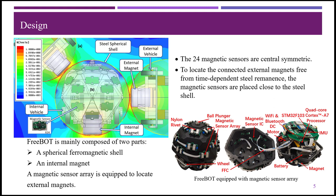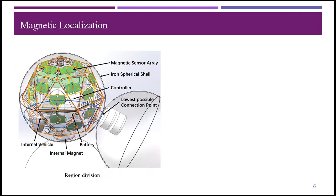To locate the connected external magnets free from time-dependent steel remnants, the magnetic sensors are placed close to the steel shell. Next, we talk about the graph convolutional network-based magnetic localization algorithm.